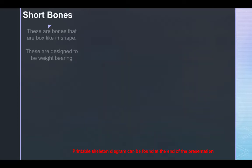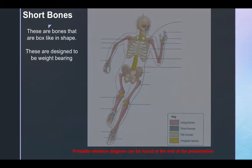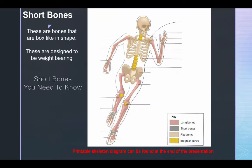Short bones are bones that are box-like in shape, and are designed to be weight-bearing. Carpals and tarsals are short bones, found in your wrist and in your ankle.